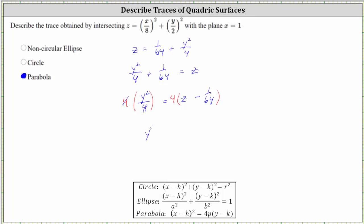Simplifying, we now have y squared is equal to 4 times the quantity z minus 1/64, which does match the form of the equation of a parabola shown below, verifying what we found graphically. I hope you found this helpful.